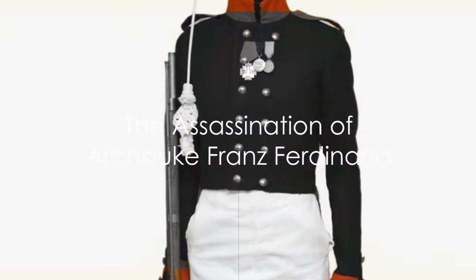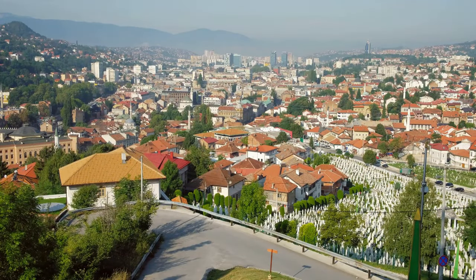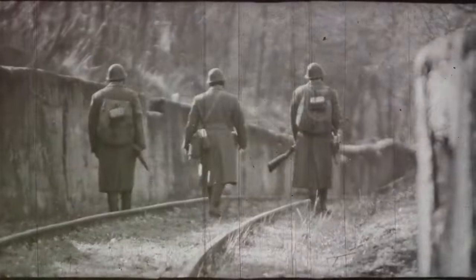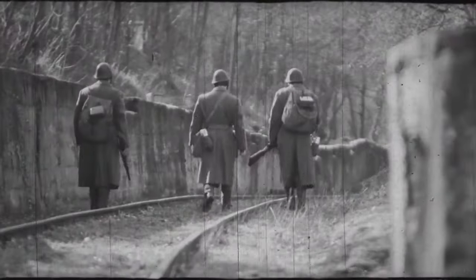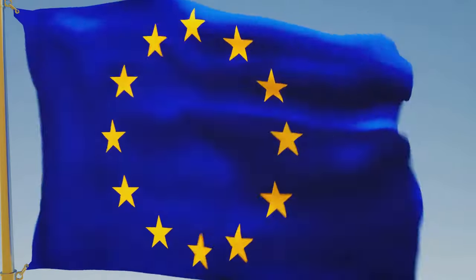June 28, 1914 — an insignificant bullet set the world aflame. On this fateful day in the heart of Sarajevo, the heir to the Austro-Hungarian throne, Archduke Franz Ferdinand, fell victim to an assassin's bullet. The man behind the trigger was Gavrilo Princip, a Bosnian-Serb nationalist whose act was fueled by a desire to end Austro-Hungarian rule over Bosnia and Herzegovina. This single act of violence set in motion a chain of events that led to the outbreak of World War I.